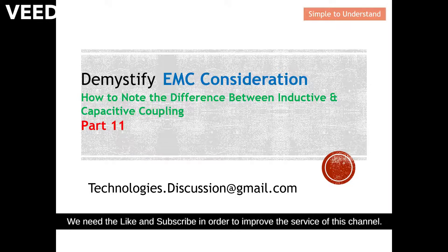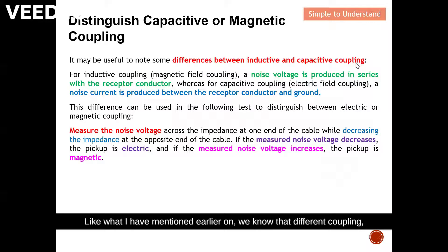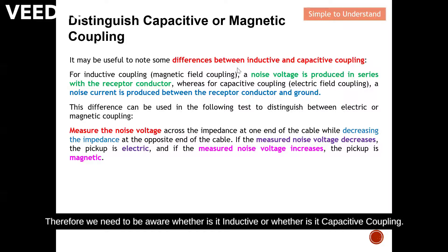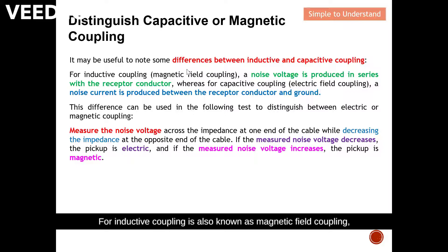First, how can we distinguish whether it is capacitive or inductive coupling? It may be very useful to note some differences between inductive and capacitive coupling. As mentioned earlier, different coupling requires different techniques, so we need to be aware whether it is inductive or capacitive coupling in order to apply the right techniques to resolve the situation. For inductive coupling, also known as magnetic field coupling, a noise voltage is produced in series with the receptor conductor.